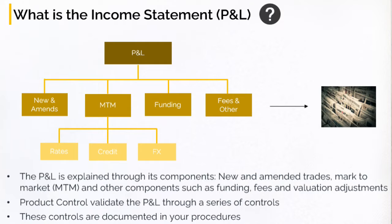If you recall from my first video, 'What is Product Control?', hopefully you remember that when I spoke about the income statement or the profit and loss report, I mentioned that we first decompose that P&L — so break it up into its underlying components like new trades, mark-to-market, funding, fees, and other. But then for the mark-to-market P&L, we do something further, and that is we attribute the P&L into its underlying drivers.